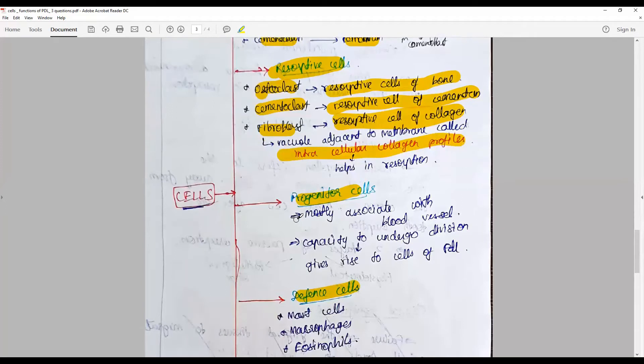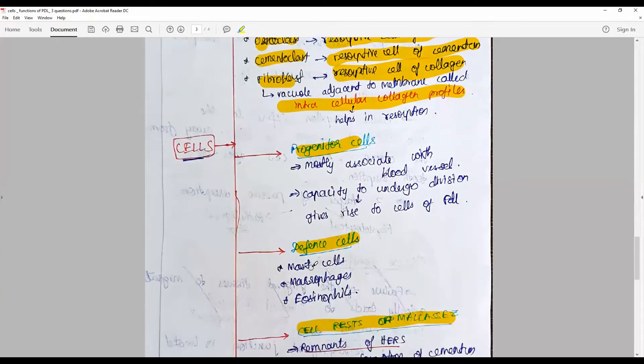Progenitor cells of blood vessels like pericytes have the capacity to undergo division and give rise to new blood vessels. And sometimes some different cells like mast cells, macrophages, lymphocytes, eosinophils, depending upon the amount of inflammatory challenge.